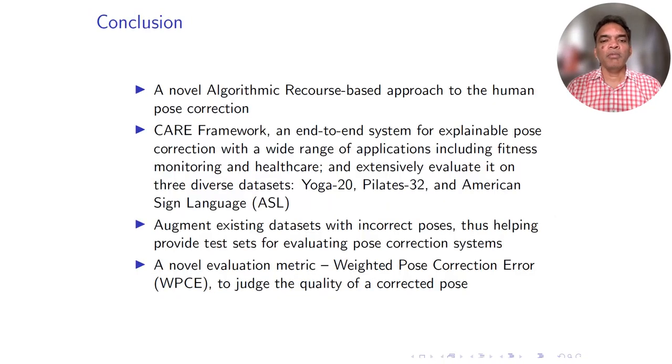In summary, we have come up with a novel task of human pose correction using algorithmic recourse. We have an end-to-end framework that is generalizable not only on fitness datasets but also on ASL American Sign Language. We have augmented these datasets to have test sets of incorrect poses, and finally, we have introduced a novel evaluation metric to judge the quality of the goodness of the correction.